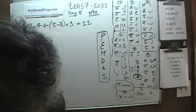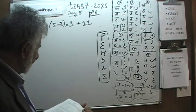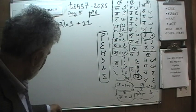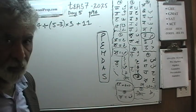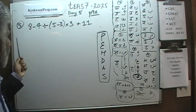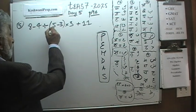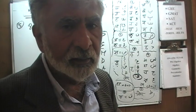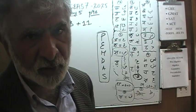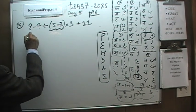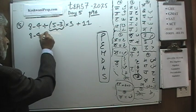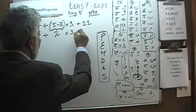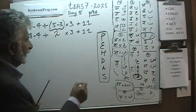Let me verify that with the book — yes: 8 minus 4 divided by (5 minus 3) times 3 plus 11. We go strictly in this order. The very first step is to check for parentheses. There is one right here: (5 minus 3). We always rewrite the entire expression each time and line it up so we don't make errors. 5 minus 3 is 2, so we now have: 8 minus 4 divided by 2 times 3 plus 11.